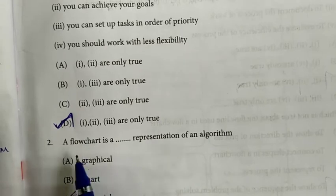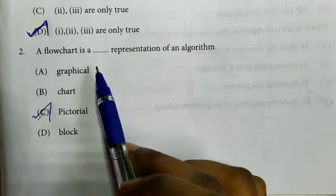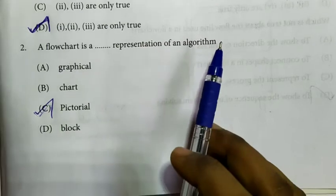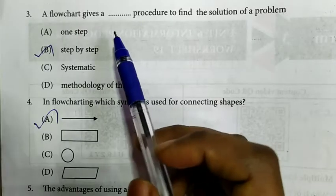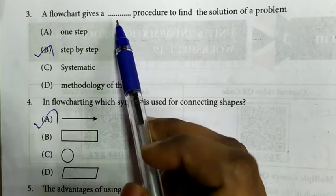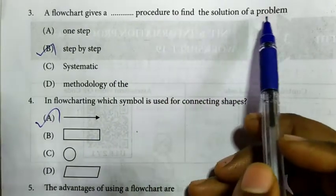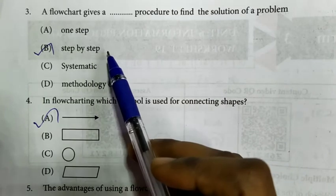Second question: A flowchart is a dash representation of an algorithm. Answer is option C: Pictorial. Third question: a flowchart gives a dash procedure to find the solution of a problem. Answer is option B: Step by step.